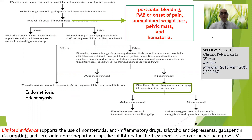For a patient presenting with chronic pelvic pain: after history, examination, and red flag assessment. Red flags again include: post-coital bleeding, postmenopausal bleeding or pain, unexplained weight loss, pelvic mass, or hematuria — these are serious symptoms requiring urgent evaluation. If no red flags, look for a specific cause. If found (endometriosis, adenomyosis), treat it. If not found on examination, proceed to investigations. If investigations are normal and pain is severe, consider laparoscopy. If investigations are abnormal (e.g., positive chlamydia), proceed to treatment.